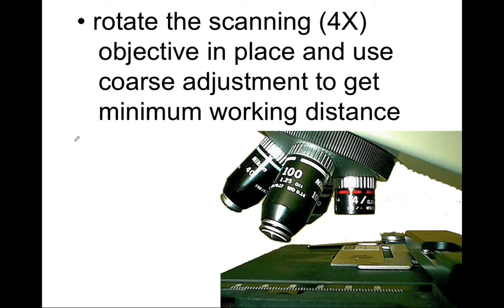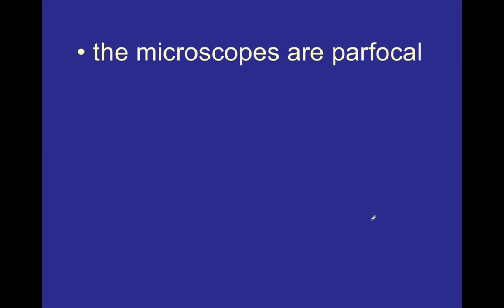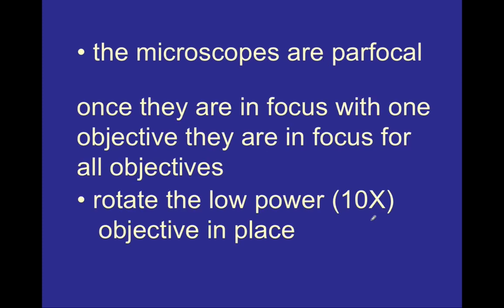As you look through the ocular lens, use the coarse adjustment knob to bring the stage up closer to the scanning objective until that picture is finally in focus. At this point you are looking for the minimum working distance that gives you a nice clear picture. You can use the stage adjustment knobs to move the microscope slide around, but always start with the coarse adjustment knob, and only after that will you use the fine adjustment knob to make very minor changes in the working distance.